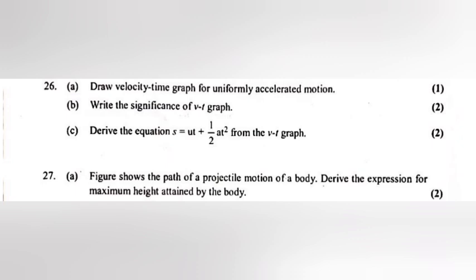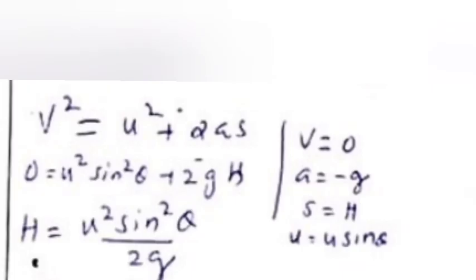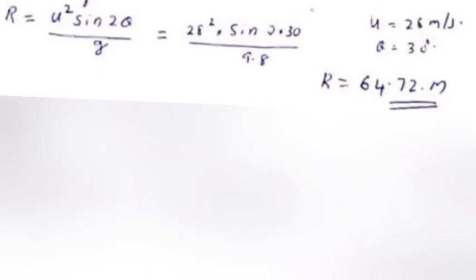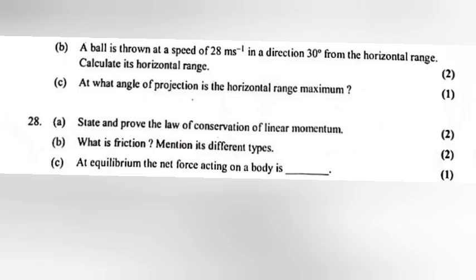Question 27A: Figure shows the path of a projectile motion of a body. Derive the expression for maximum height attained by the body. 27B: A ball is thrown at a speed of 28 meters per second in a direction 30 degrees from the horizontal. Calculate its horizontal range. Answer: R is equal to u square sine 2 theta by G. Final answer: R is equal to 64.72 meters. 27C: At what angle of projection is the horizontal range maximum? Answer: Theta is equal to 45 degrees.